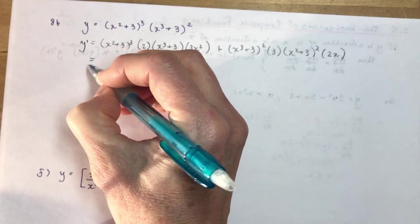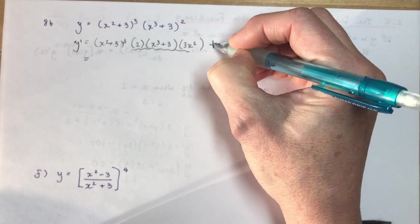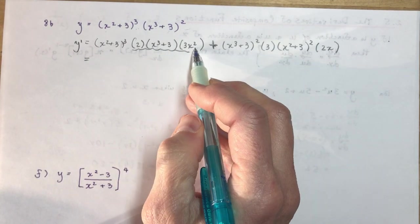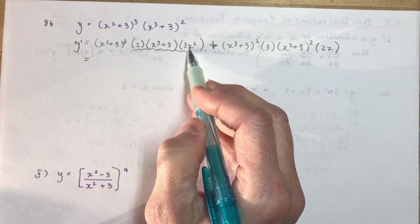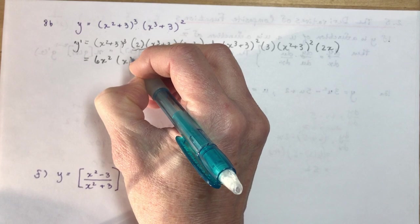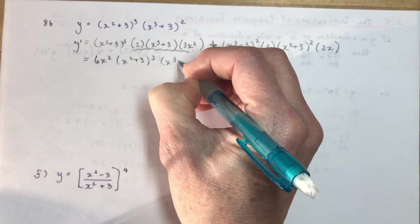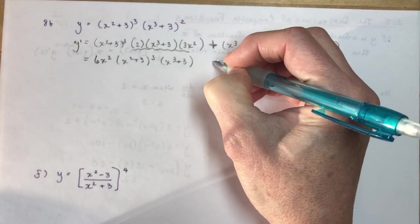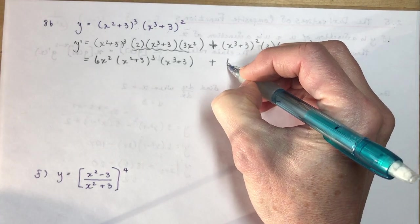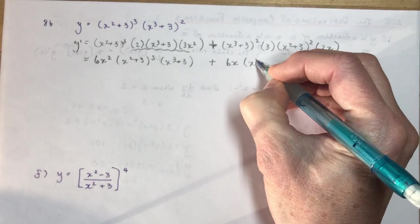So now what you need to do is simplify. So the first thing you want to watch out for is this plus sign in the middle. Okay, so you're factoring about this. Simplify the little basic monomials and constants here first. So you have 6x². And I have an (x² + 3) cubed. And I have an (x³ + 3).